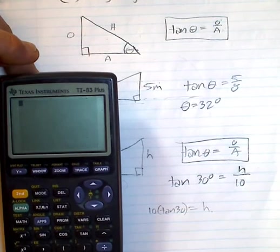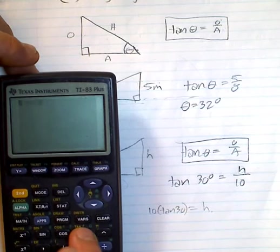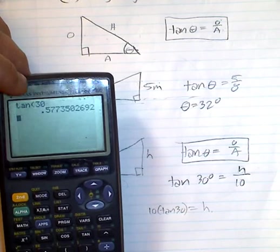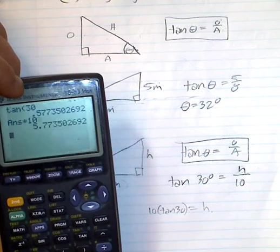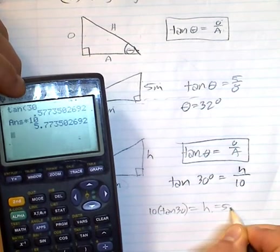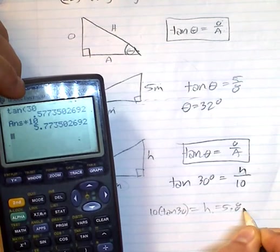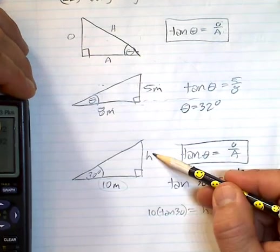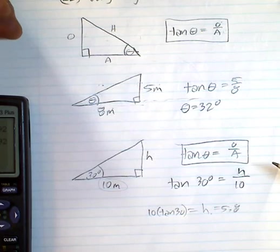But for us right now I know it's in degrees, so 10 tan 30 times 10 and I get h equals 5.8. So you have a height of 5.8 right here.